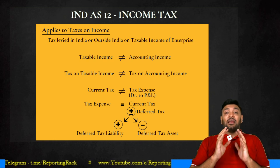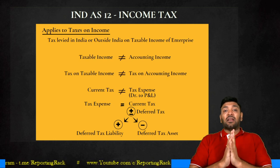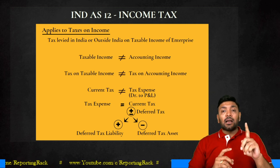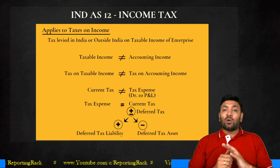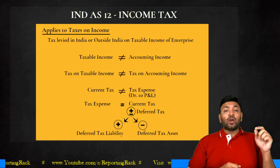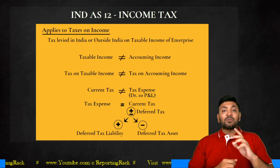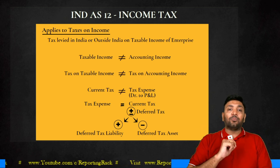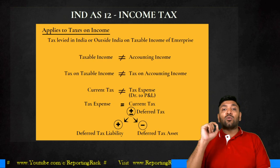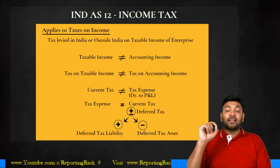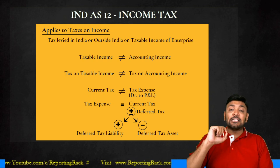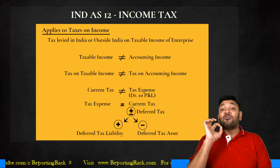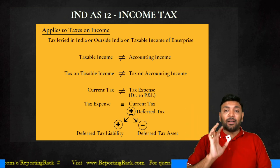The standard deals with taxes on income. Such taxes could either be levied in India or outside India. Taxable income is not equal to accounting income; tax on taxable income is not equal to tax on accounting income. So current tax is not equal to tax expense. Tax expense is debited to P&L, while current tax is your provision for tax which is paid to the department.